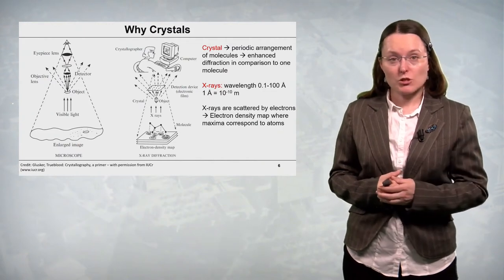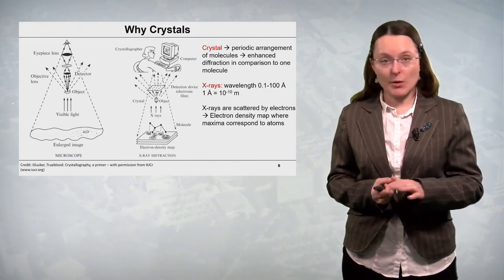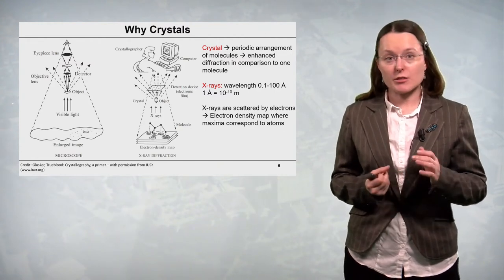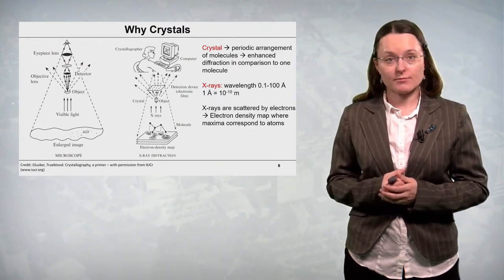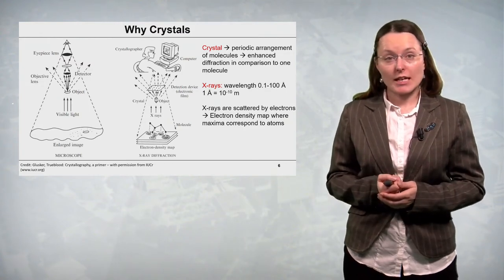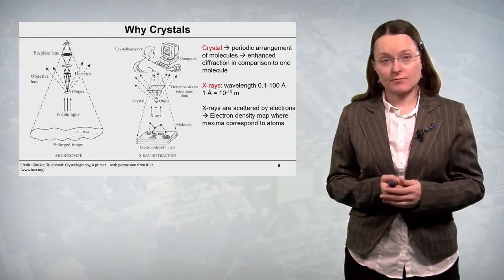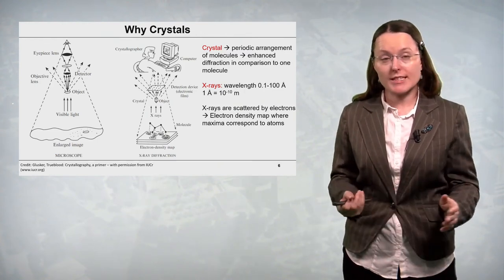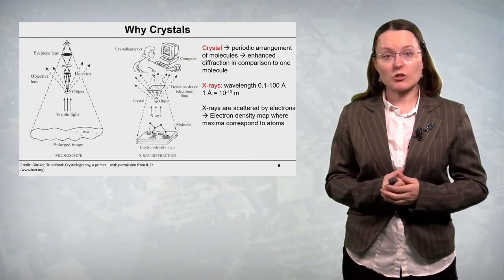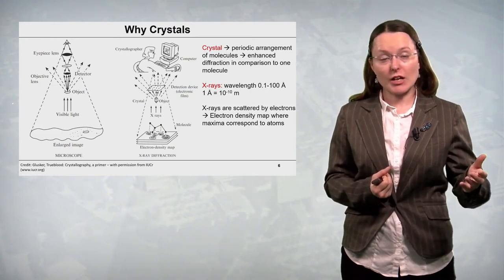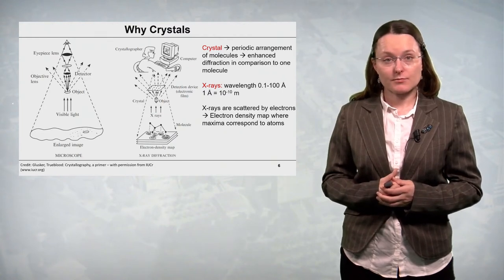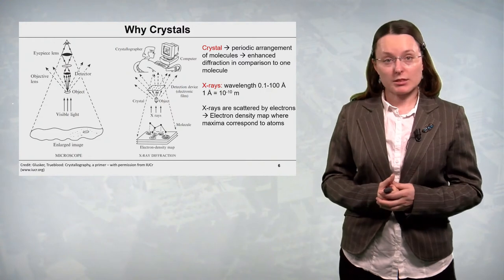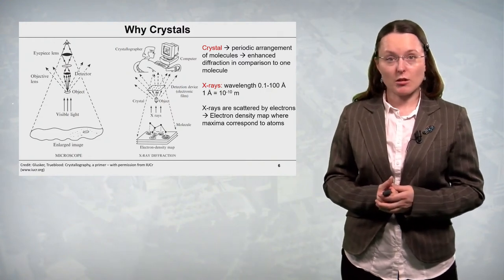These spots, which we'll call reflections, have different position, have different intensity. And they do contain some information about the structure of the diffracting object. However, this information is a kind of encrypted and we need to decrypt it. We need a crystallographer to perform crystallographic computations to decrypt the information on a diffraction pattern which is detected on a detector. And we will learn more about these computations during this part of the course.